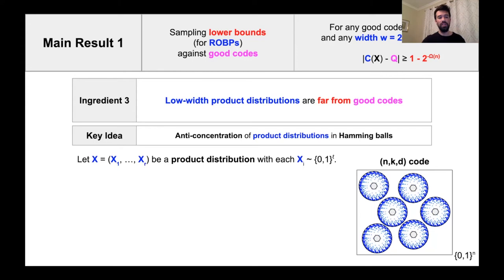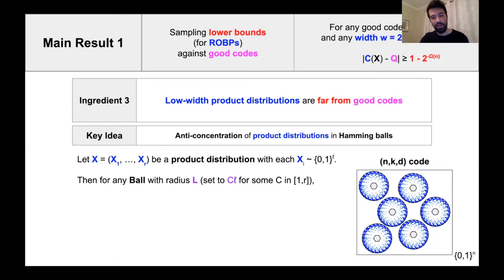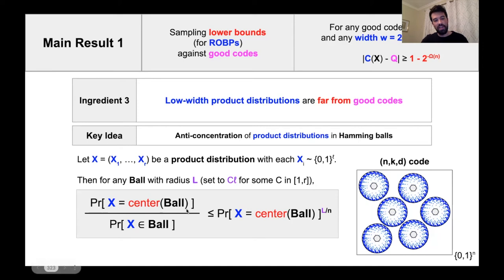The formal statement of the key idea is as follows. Suppose you have a product distribution consisting of R chunks each over L bits, with R times L equals N. Then for any ball with radius big L, which is a valid integer multiple of little L, the following inequality holds: the probability that X hits the center of the ball divided by the probability that X hits the ball itself is upper bounded by a certain quantity. The smaller this expression, the stronger the anti-concentration result.